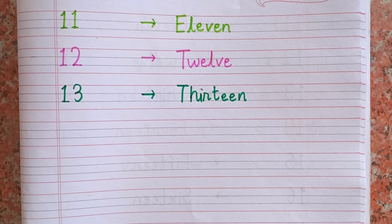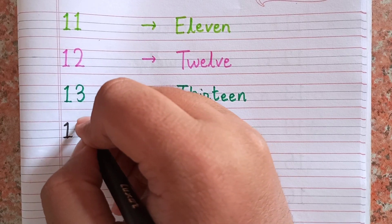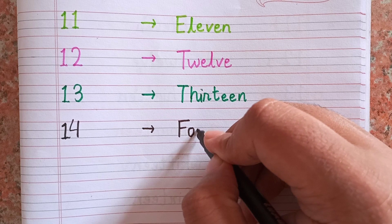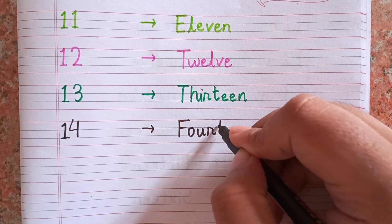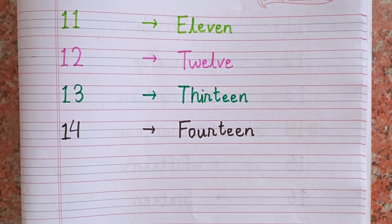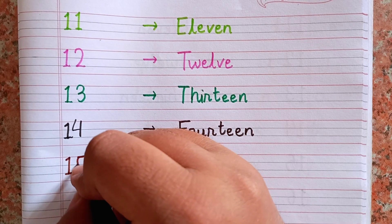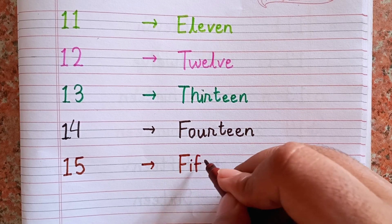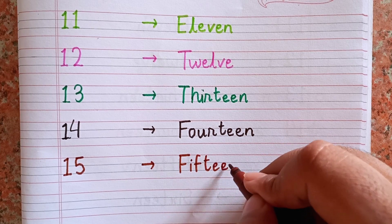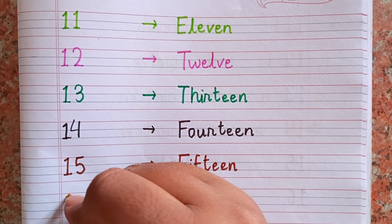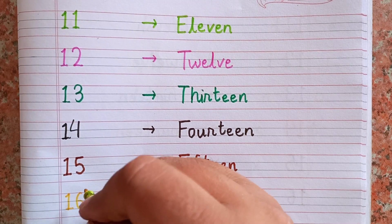After thirteen, the next number is fourteen — 1-4. The spelling of fourteen is F-O-U-R-T-E-E-N. After fourteen, the next number is fifteen — 1-5, and the spelling of fifteen is F-I-F-T-E-E-N.